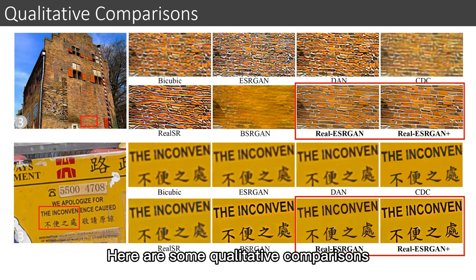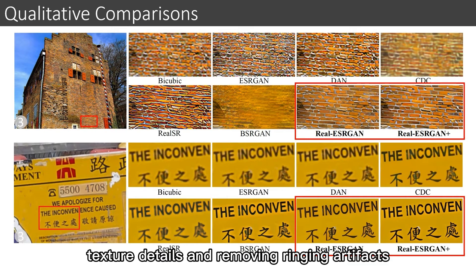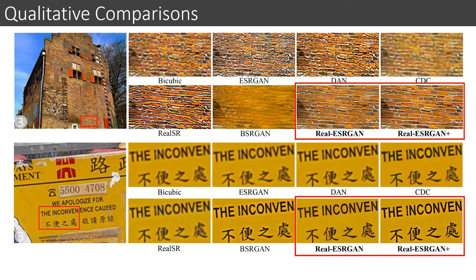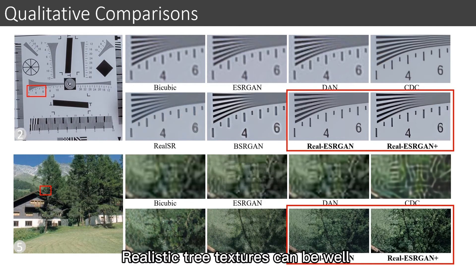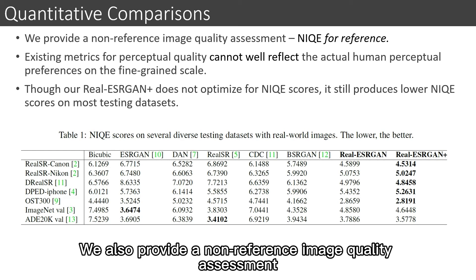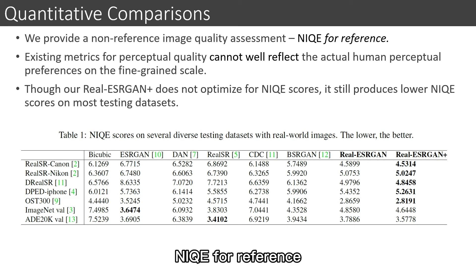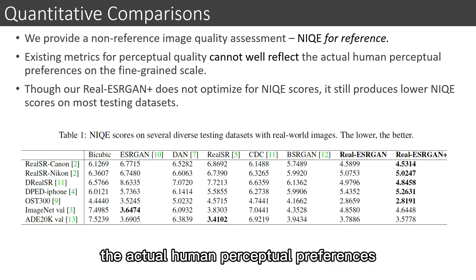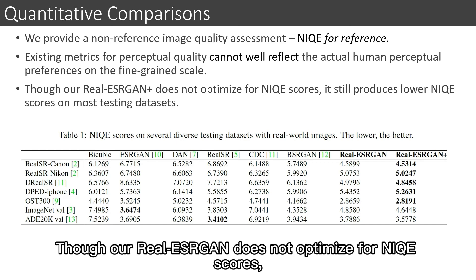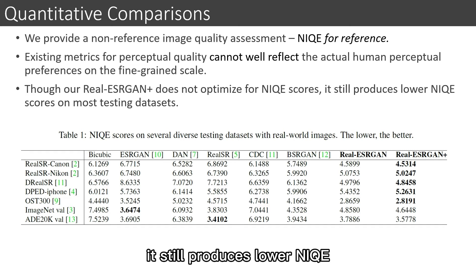Here are some qualitative comparisons. We can see that Real-ESRGAN outperforms previous approaches in both restoring brick texture details and removing ringing artifacts. In another comparison, Real-ESRGAN effectively restores details in resolution cards while removing ringing artifacts, and realistic tree textures are well recovered. We also provide a non-reference image quality assessment, NIQE, for reference. Though Real-ESRGAN does not optimize for NIQE scores, it still produces lower NIQE scores on most real testing datasets.